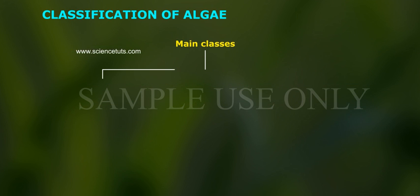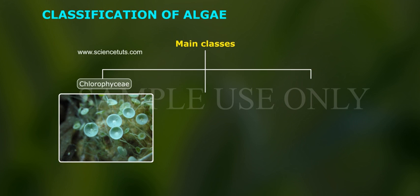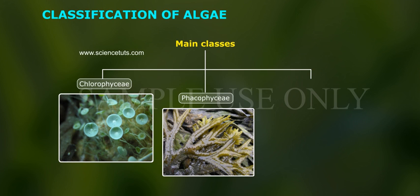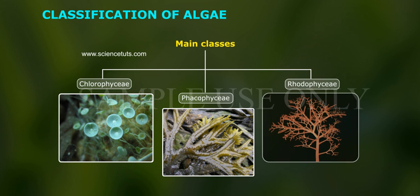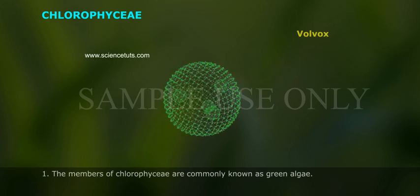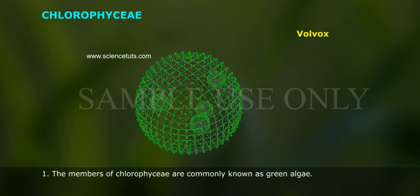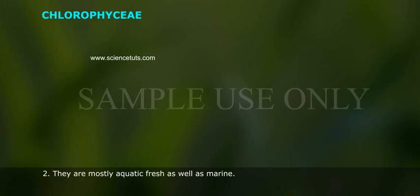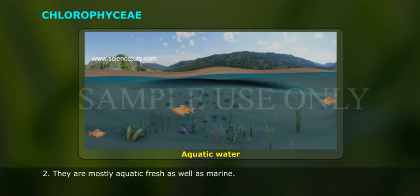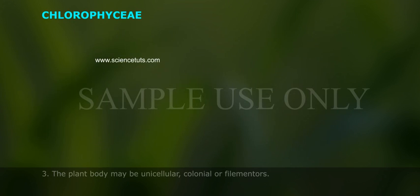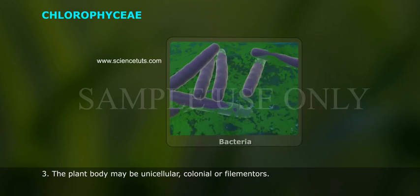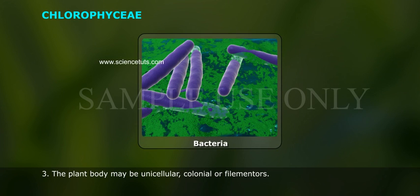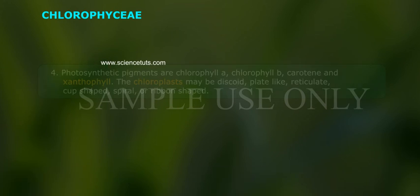The main classes are Chlorophyceae, Phaeophyceae, and Rhodophyceae. Chlorophyceae: 1. The members of Chlorophyceae are commonly known as green algae. 2. They are mostly aquatic, fresh as well as marine. 3. The plant body may be unicellular, colonial, or filamentous.